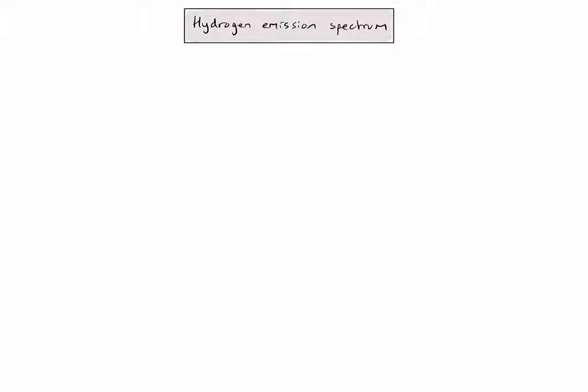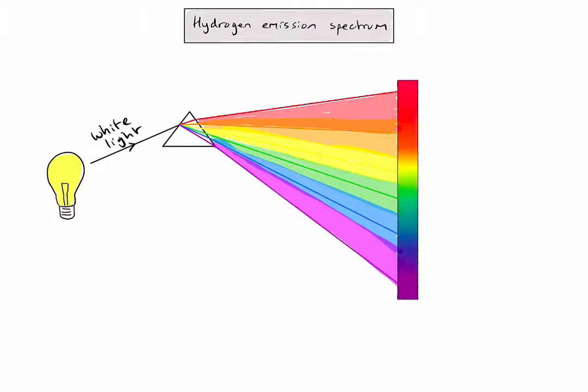Before we try to explain the hydrogen emission spectrum, it's useful to think a little bit about light. Let's take a light bulb and pass that light through a prism. As my white light passes through the prism, the different wavelengths, colours, or frequencies of light are refracted and end up being split into a nice rainbow-coloured spectrum.